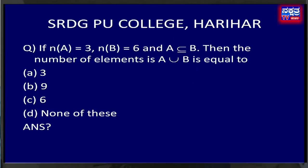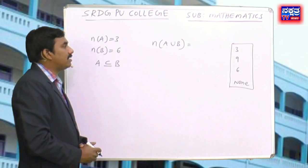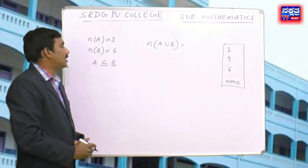Next question: if n(A) = 3, n(B) = 6 and A is a subset of B, then the number of elements in A∪B equals: option A: 3, option B: 9, option C: 6, option D: none of these. Given n(A)=3, n(B)=6, and A⊆B — find n(A∪B). This is a simple logical question.